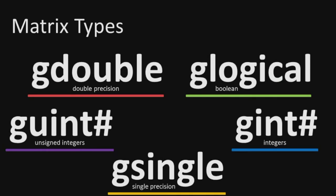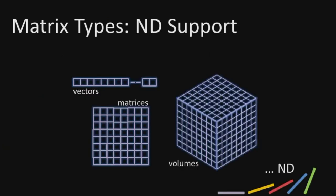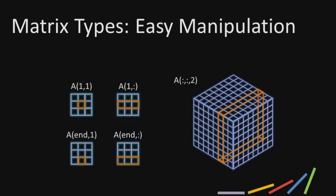The way you interact with JACKET inside MATLAB is through six major data types: G-double, G-logical, G-uint, G-int, and G-single. You cast your data to these matrix types, and then all following commands on those pieces of data run on the GPU. These data types work almost exactly like MATLAB arrays — you can work with vectors, matrices, and volumes. Everything works the same way as CPU variables, including subscripted referencing with colon operators to pull out slices of volumes or rows of matrices, and ND indexing for easy array manipulation.